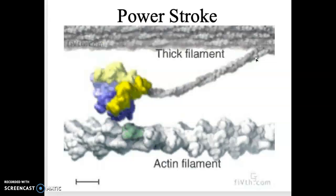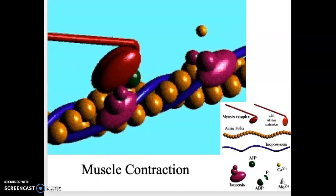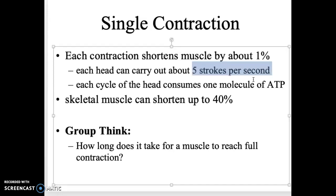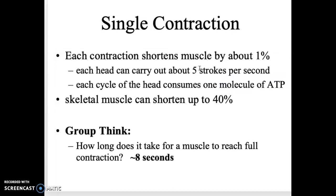Looking at a microscope picture, you can see the myosin head binding to the actin: it will pull, release, stretch out, grab, pull, release, stretch out, grab — and it continues. I highly recommend watching a video on this because it's much easier to understand when you're watching it happen. Each contraction shortens muscle by about one percent, and each myosin head can do about five strokes — five grab-pull-release cycles — per second. Each cycle uses one molecule of ATP. Skeletal muscle can only shorten about 40%, so it takes about eight seconds for a muscle to reach full contraction — 40 divided by five equals about eight seconds.